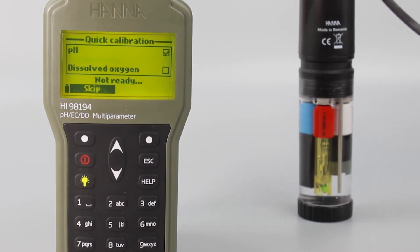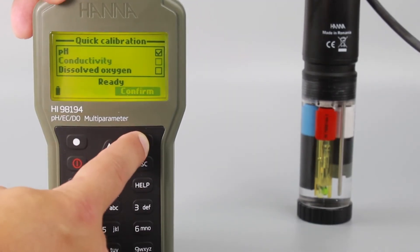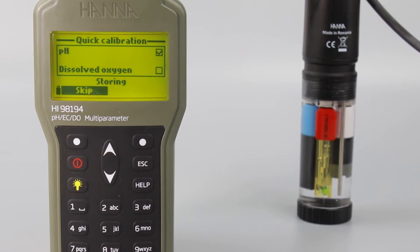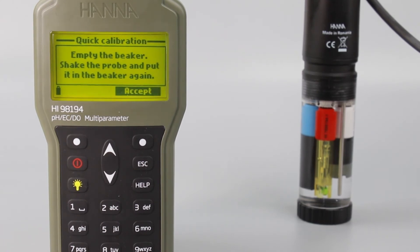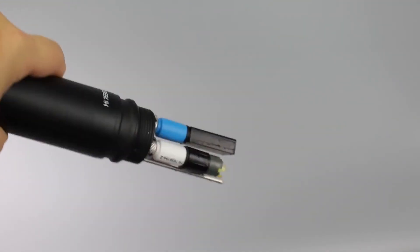Once you get to the dissolved oxygen calibration, you'll be prompted to empty the beaker. Unscrew the calibration beaker and empty the solution. Then, shake any remaining liquid off the probe.